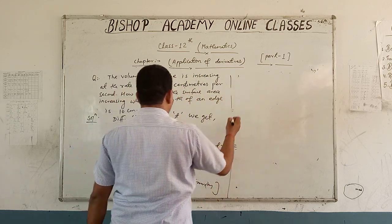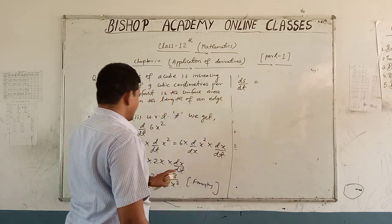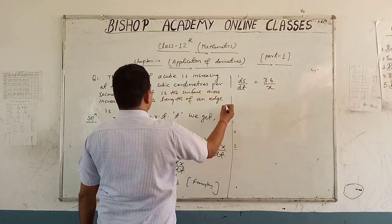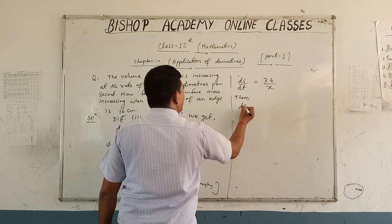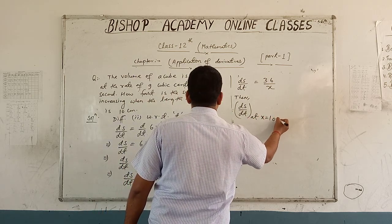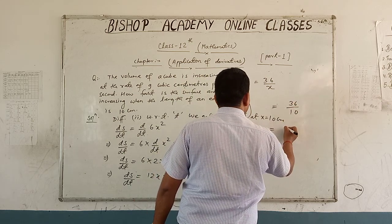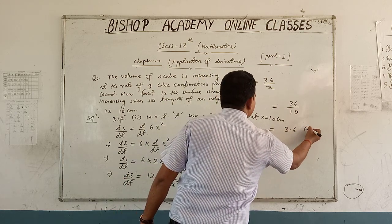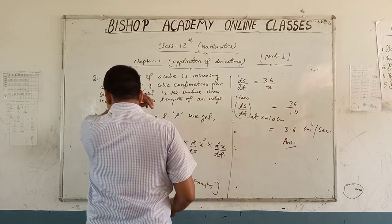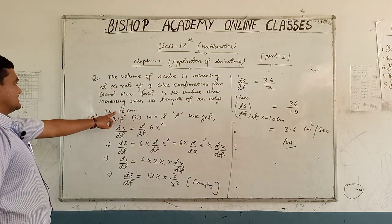So dS upon dt is equal to 36 upon x. Then dS upon dt at x equal to 10 cm is equal to 36 upon 10, which is equal to 3.6 cm squared per second. This is the required rate of change of surface area when the edge length is 10 cm.